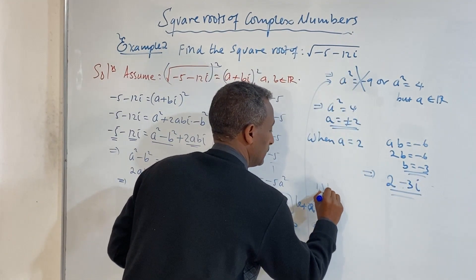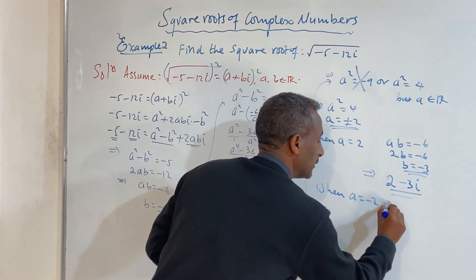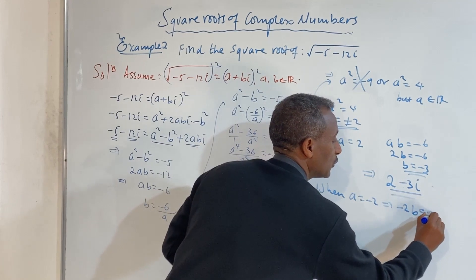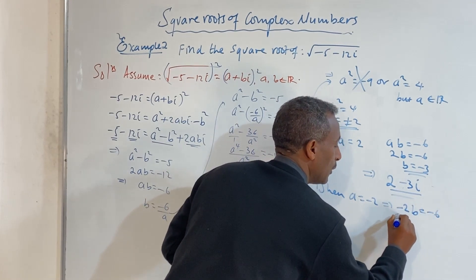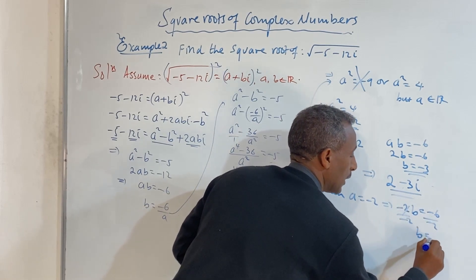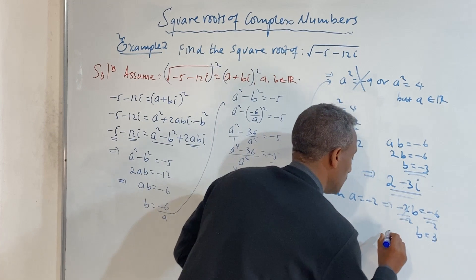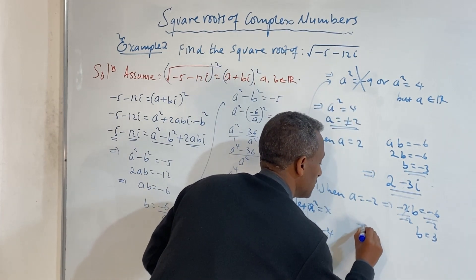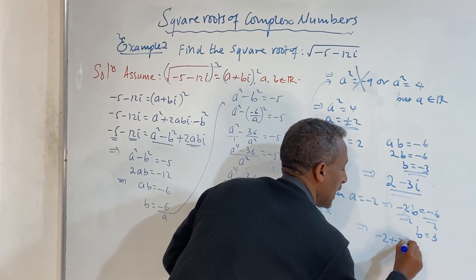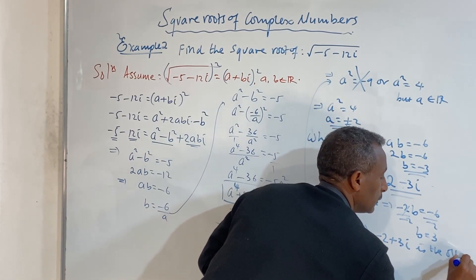When a equals minus 2, we use ab equals minus 6: minus 2 times b equals minus 6, so b equals 3. Therefore, minus 2 plus 3i is the other root.